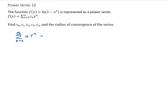The geometric series looks like this. It starts with a value a, then to get the second term in the series you multiply by r, and then to get each subsequent term you multiply by another r. We know that this adds up to a over 1 minus r, as long as the absolute value of r is less than 1.